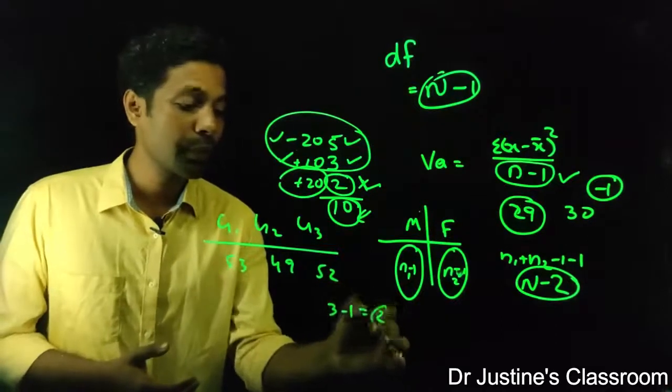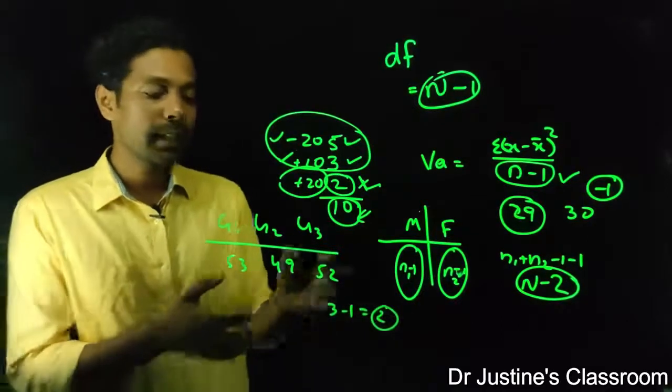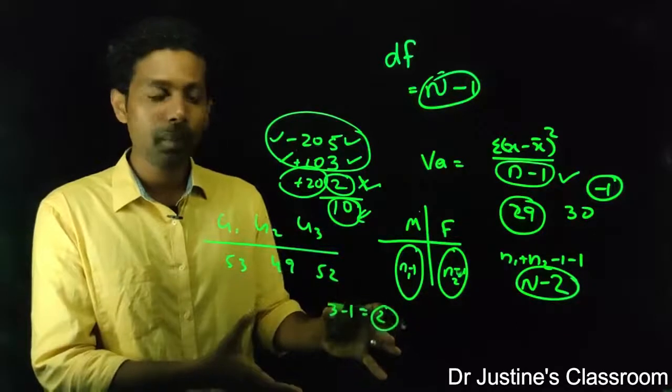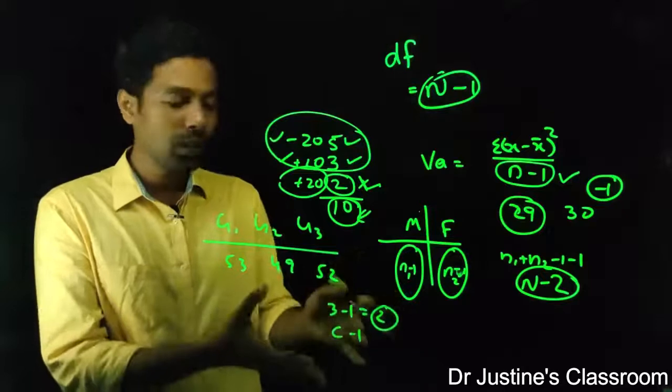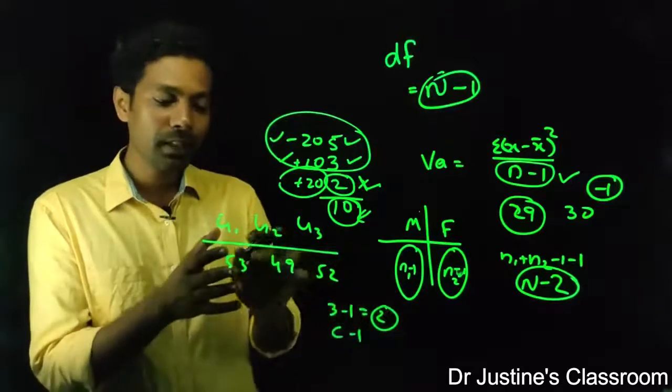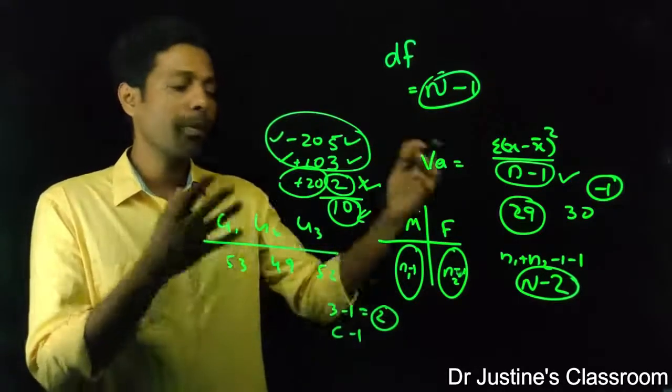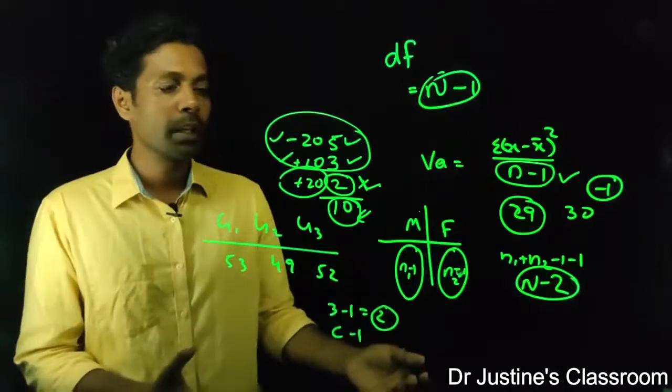So 2 is the degree of freedom, between group degree of freedom. Generally in an ANOVA table, summary of ANOVA table, we call it c minus 1, that is number of columns or number of groups minus 1. So it's basically n minus 1 itself.